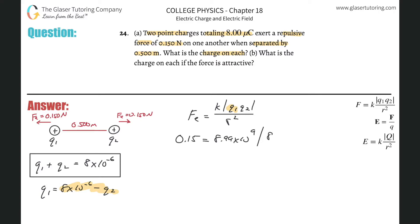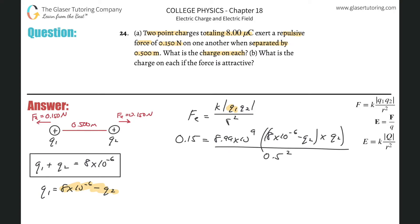So here we'll have 8 times 10 to the minus 6 minus Q2, and we can get rid of the absolute values. That substituted expression, times Q2, is all divided by R squared, which is 0.5 meters squared. Cross-multiplying gives us 0.15 times 0.5 squared, which is 0.0375. Dividing by 8.99 times 10 to the ninth, we get 4.17 times 10 to the minus 12, which equals 8 times 10 to the minus 6 minus Q2, times Q2.